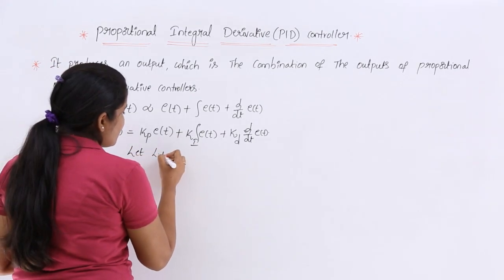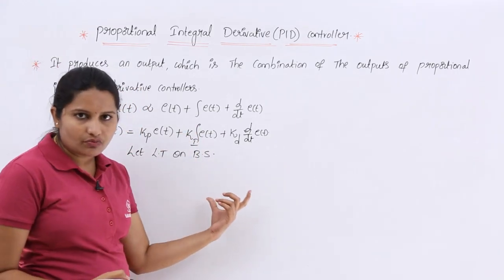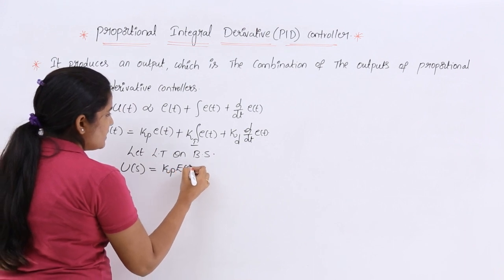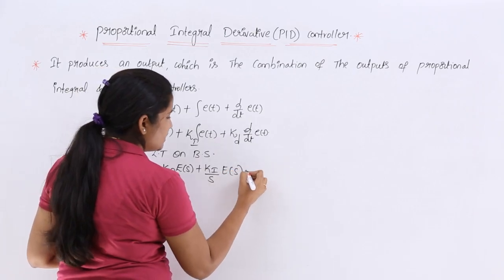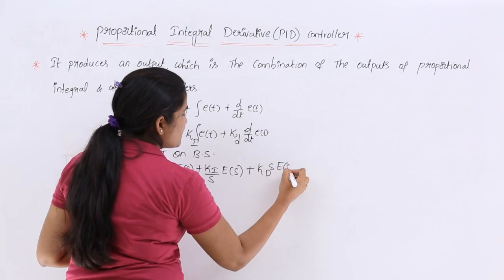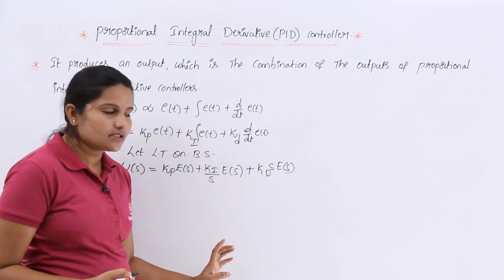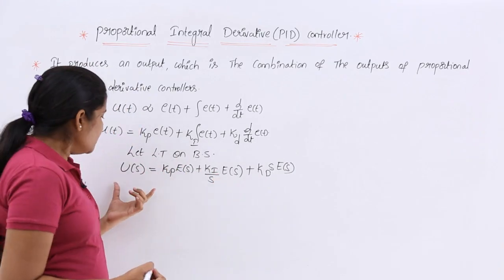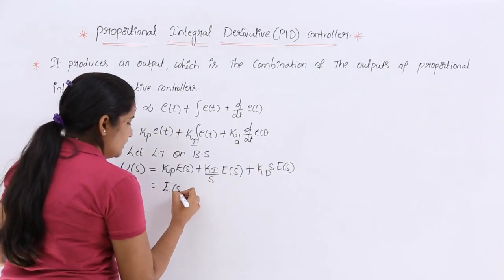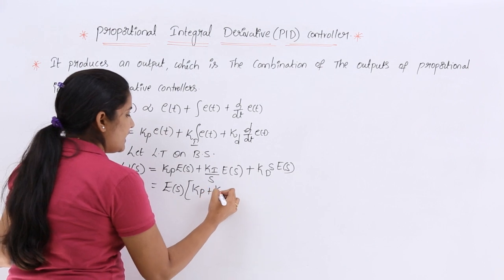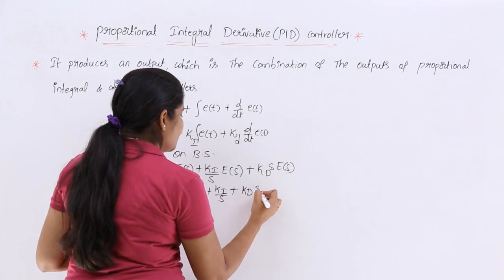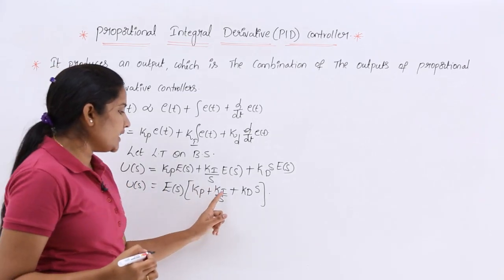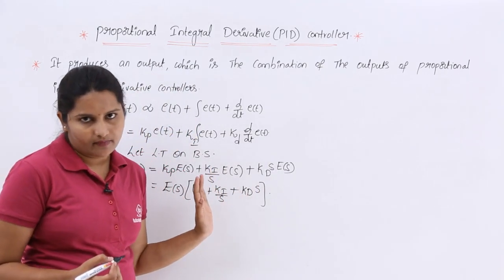Taking the Laplace transform on both sides: U(s) equals Kp·E(s) plus Ki/s·E(s) — because integration gives a denominator s in the Laplace domain — plus Kd·s·E(s), because differentiation gives multiplication by s in the Laplace transform. Taking E(s) as common: U(s) = E(s)·[Kp + Ki/s + Kd·s].